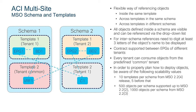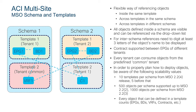Also consider the number of objects supported in a schema. With MSO 2.2.3 and later, we support a thousand objects — EPGs, bridge domains, VRFs, and contracts all count as objects. The schema has a policy counter in MSO that counts the amount of objects for you. When you get close to a thousand objects inside a schema, that's probably the time to start deploying a separate schema.